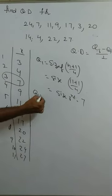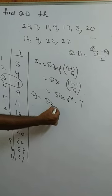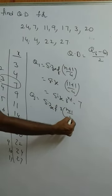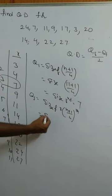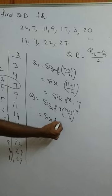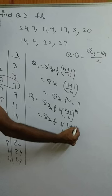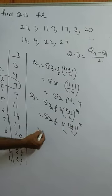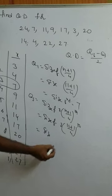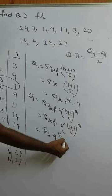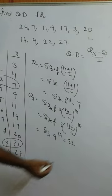Next, Q3 is 75% of the given data. The formula is the size of the 3(n+1)/4 th observation. With n = 11, that is 3 × (11+1)/4 = 3 × 3 = 9th observation. The 9th observation is 22, so Q3 = 22.